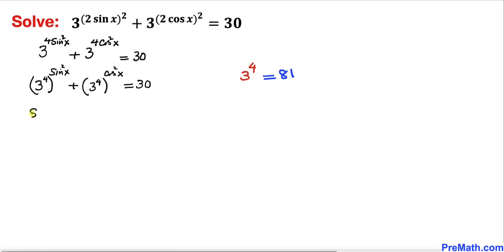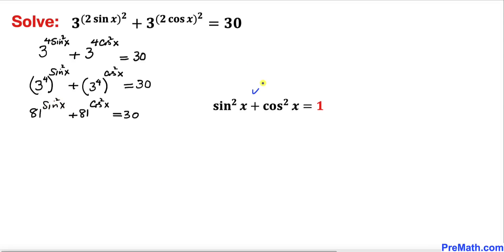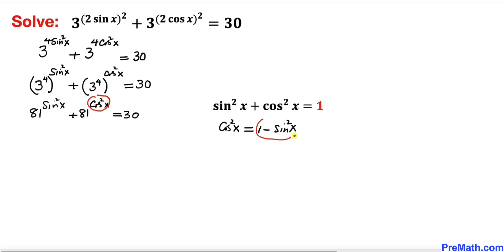So our equation becomes 81^(sin²x) plus 81^(cos²x) equals 30. Now let's recall the famous trigonometric identity: sin²x + cos²x = 1. Moving sin²x to the right gives us cos²x = 1 − sin²x. I'm going to replace cos²x with (1 − sin²x), so the equation becomes 81^(sin²x) plus 81^(1 − sin²x) equals 30.